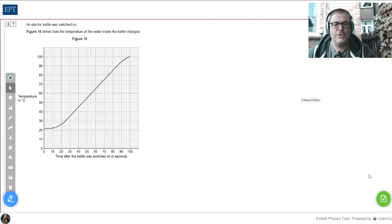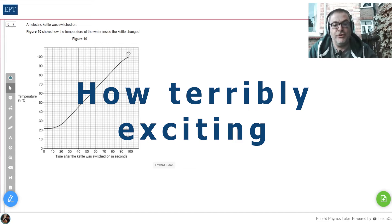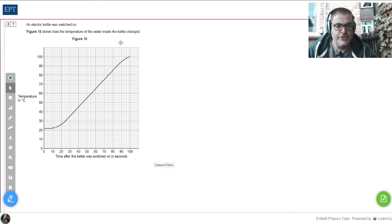Hello physics fans, this is question 7 from AQA high tier 2020. An electric kettle was switched on. Figure 10 shows how the temperature of the kettle changed over time.